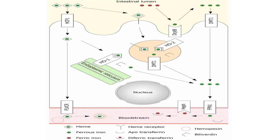If the body needs iron, it passes into the portal circulation. To exit the intestinal cell, iron must pass through a gate responsible for iron release from any cell in the body — not just intestinal cells. This gate is called ferroportin 1, the sole iron exporter in the body. At this point, iron is in the ferrous form.